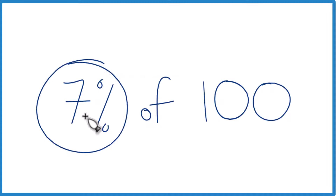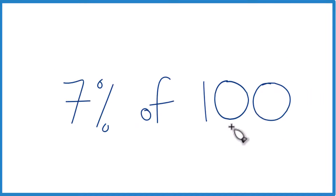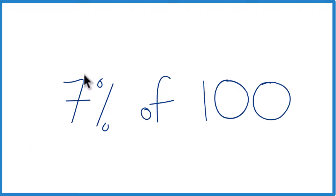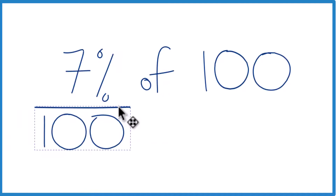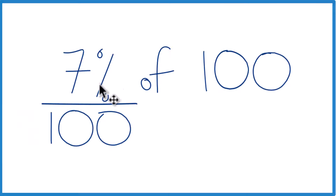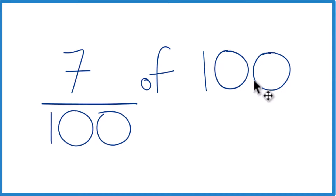Here's how you can take 7% of 100. This is kind of a special case — it makes it easier because we're saying 7% of 100. When we talk about a percentage, we're talking about this number out of 100. So 7 out of 100 is 7%, and 7 out of 100 is just 7. So 7% of 100 is 7.